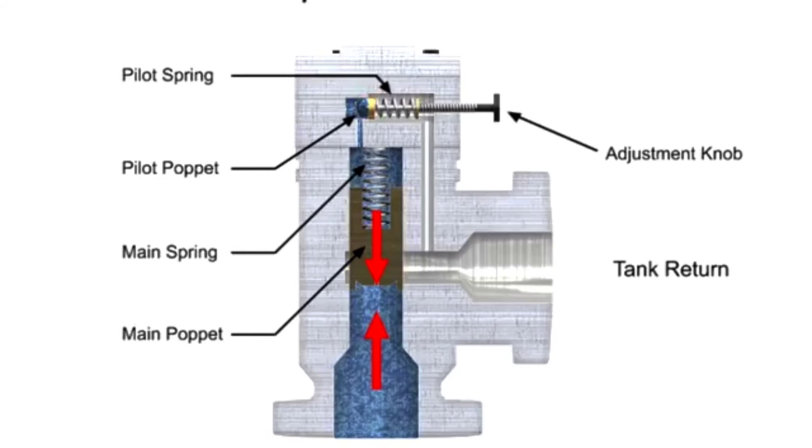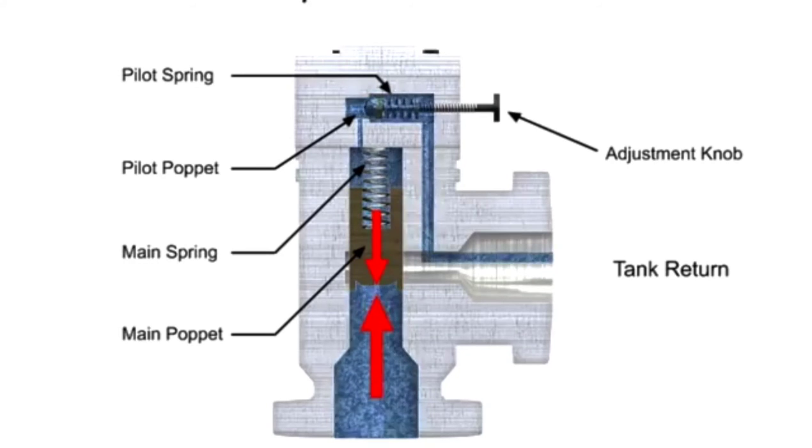When line pressure increases higher than the relieving pressure, the pilot relief valve moves to its open position. This allows fluid to flow from the pressure side through the orifice and across the pilot relief valve to the tank.